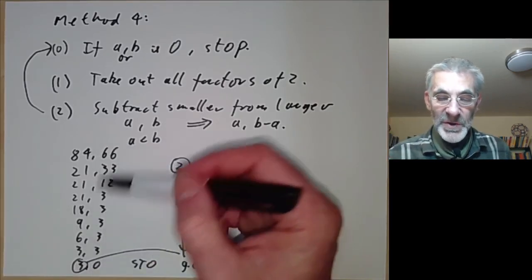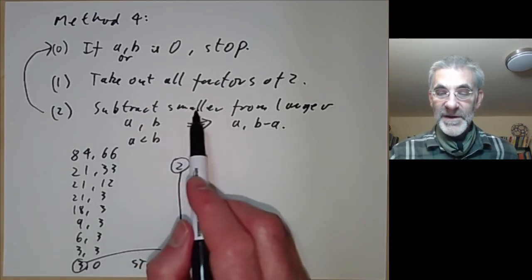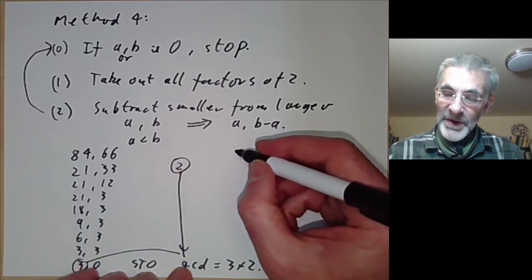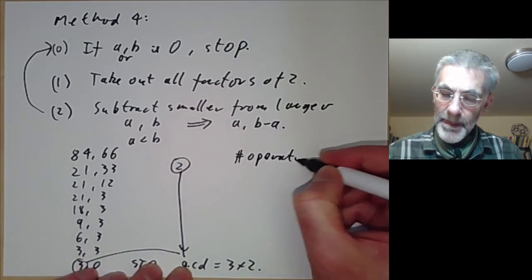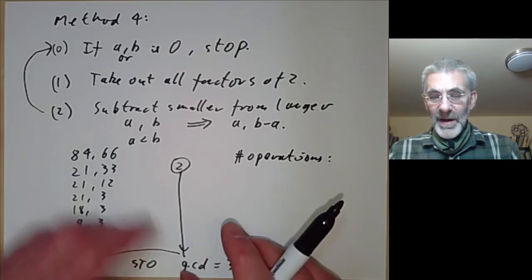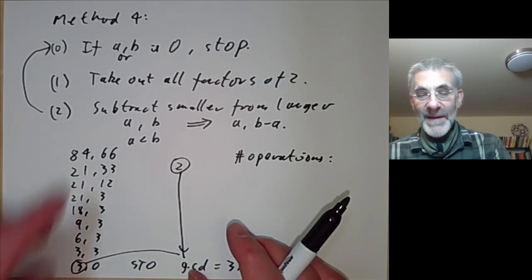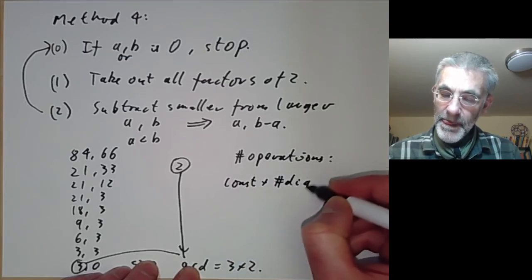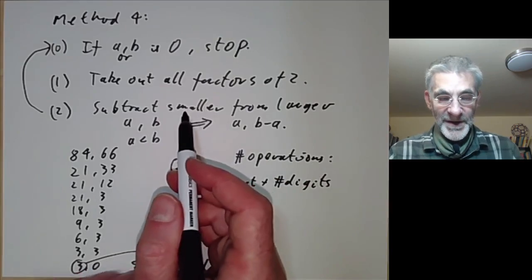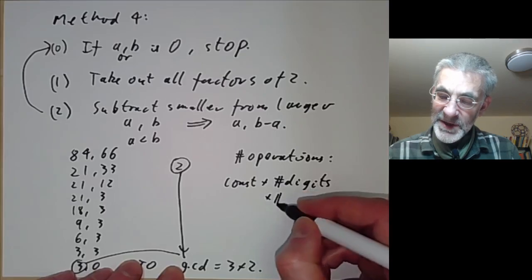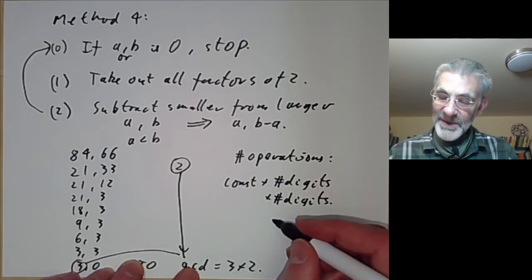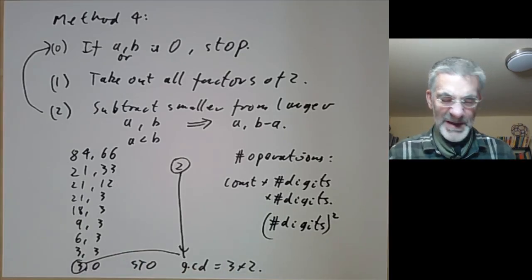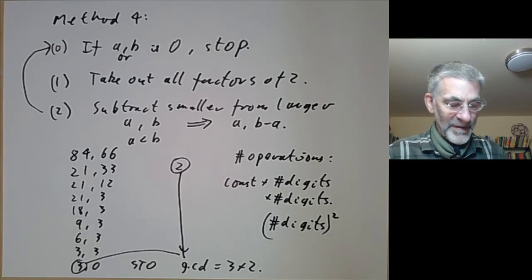Notice that takes more steps than Euclid's algorithm. However, each step is much faster because instead of doing a long division — which would be horrible if the numbers had thousands of digits — we're just doing a subtraction. Each step you're roughly dividing by 2, so the number of steps is some constant times the number of digits. Each subtraction step also takes about the number of digits, so the total number of operations is some constant times the number of digits squared. This is better than the naive implementation of Euclid's algorithm, and you can achieve the same improvement with a more careful implementation of Euclid's algorithm.